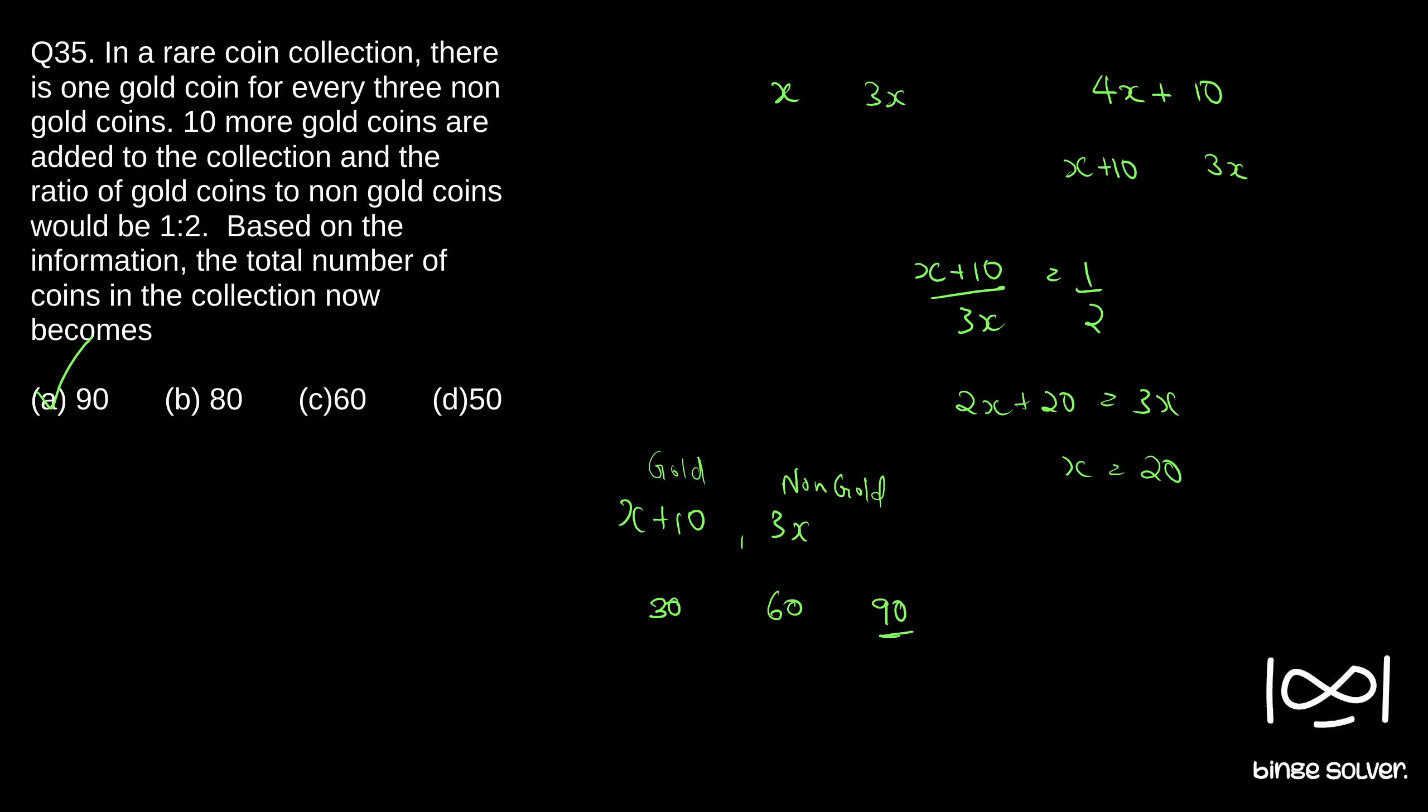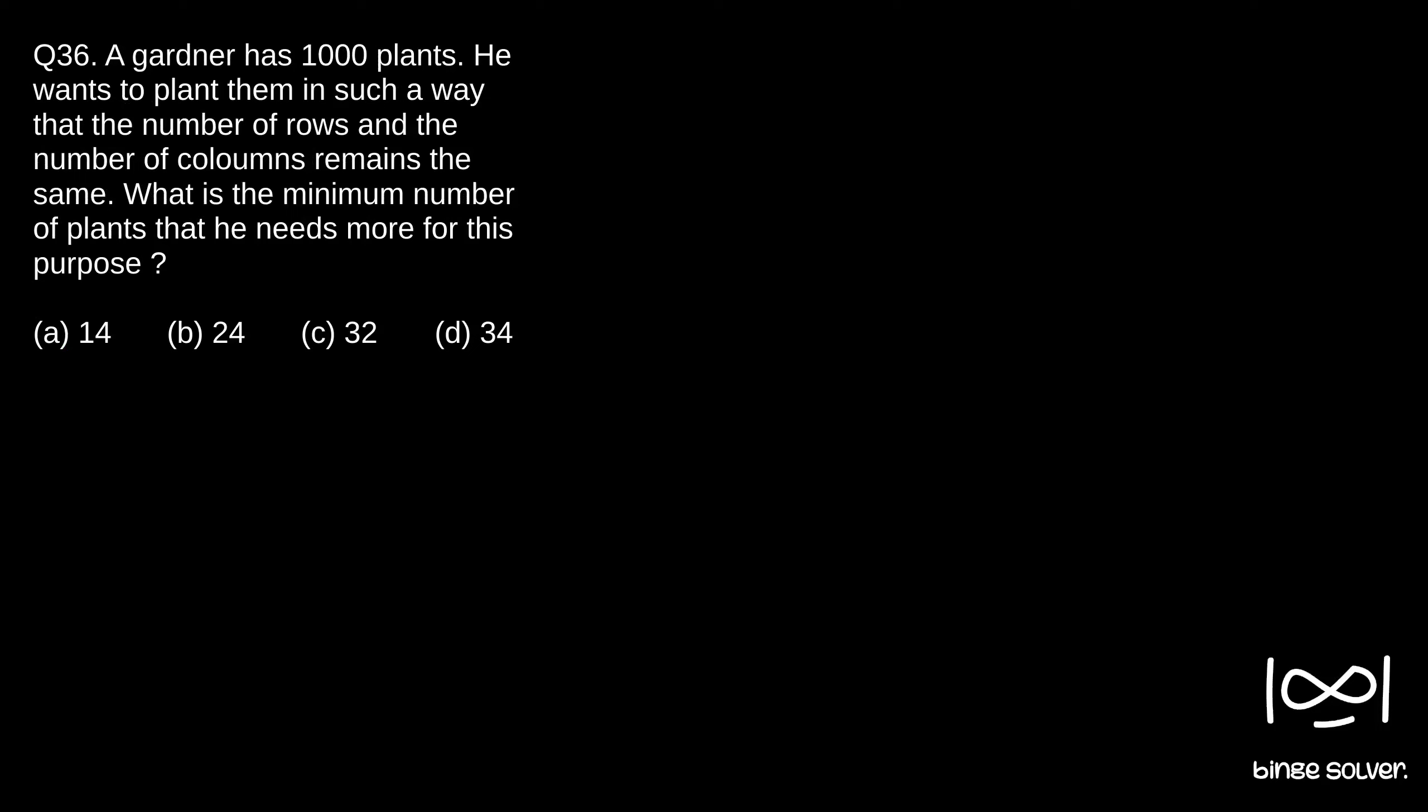Next question. Question 36. A gardener has 1000 plants. He wants to plant them in such a way that the number of rows and number of columns remain the same. What is the minimum number of plants that he needs more for this purpose?